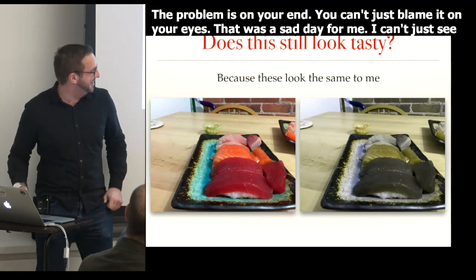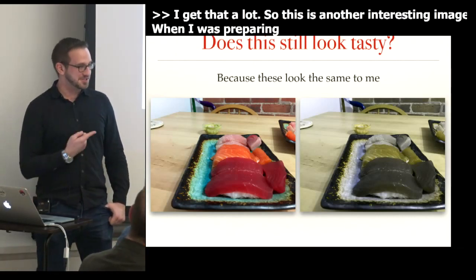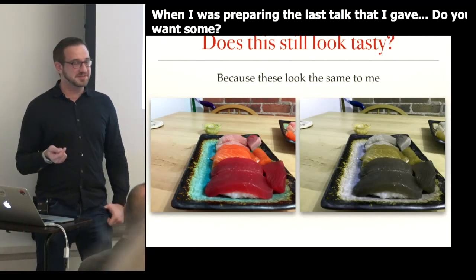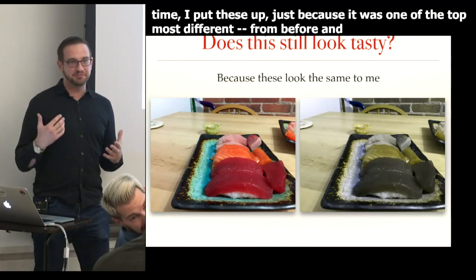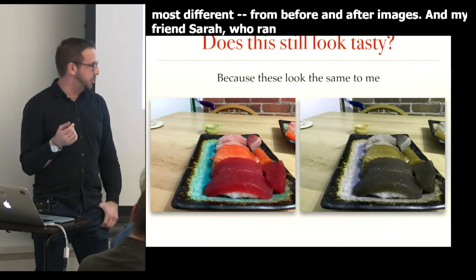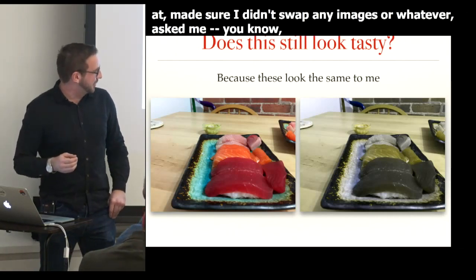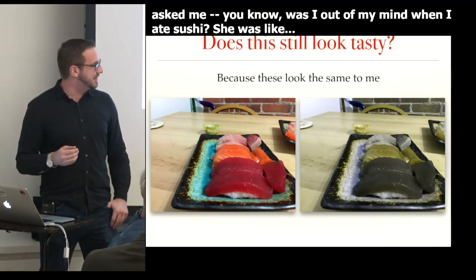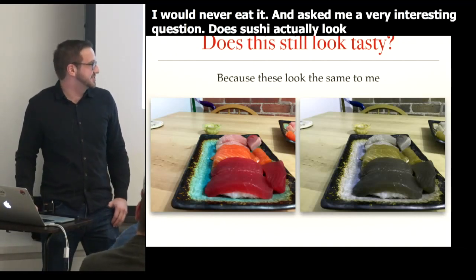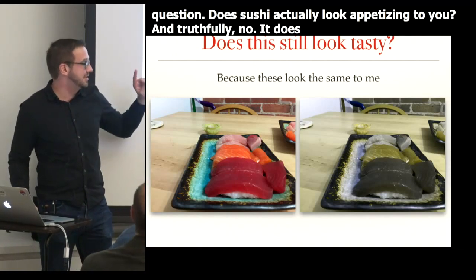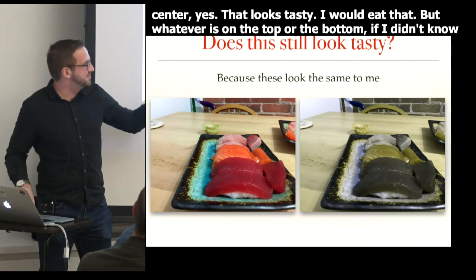When I was preparing the last talk, I included a sushi image because it was one of the most different before-and-after images. My friend Sarah, who ran that meetup and was reviewing my slides, asked what was going on in my mind when I ate sushi — she said the one on the right looks rancid, she'd never eat it. Then she asked: does sushi actually look appetizing to you? Honestly, no, it does not. The salmon in the center, yes — that looks tasty. But whatever's on the top and bottom, if I didn't know my friend Tyler wasn't trying to poison me, I would never put it in my mouth.